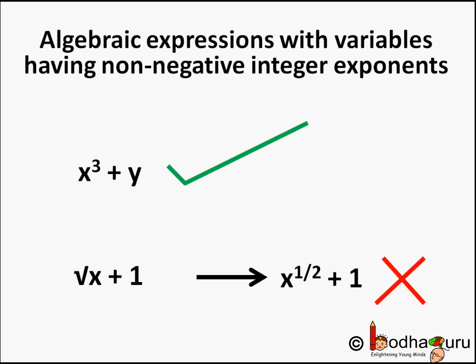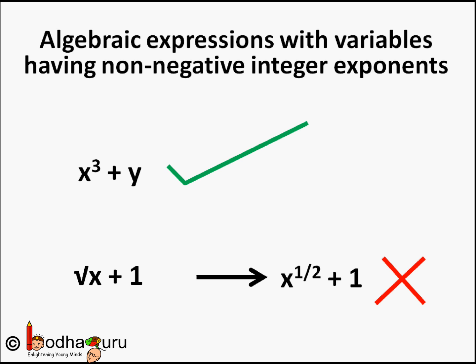But square root of x plus 1 is not a polynomial, because square root of x equals x to the power 1 by 2. It has 1 by 2 as the exponent, which is a fraction — it is not an integer. So square root of x plus 1 is not a polynomial.